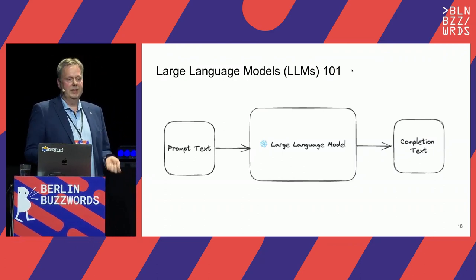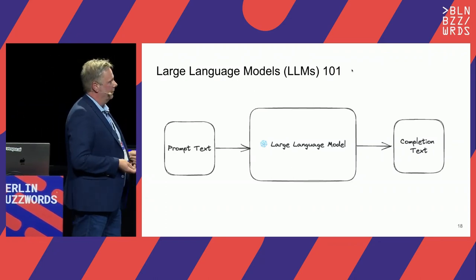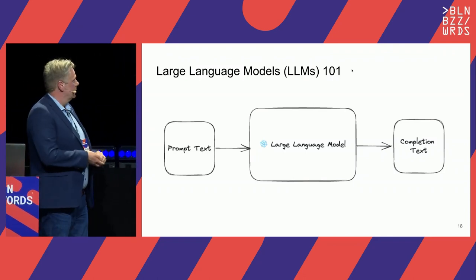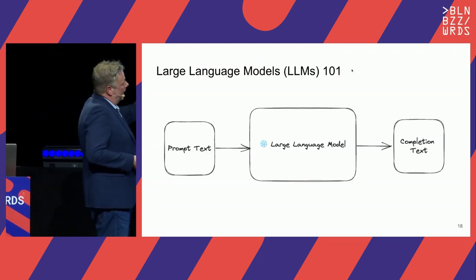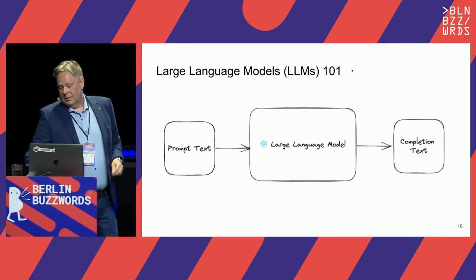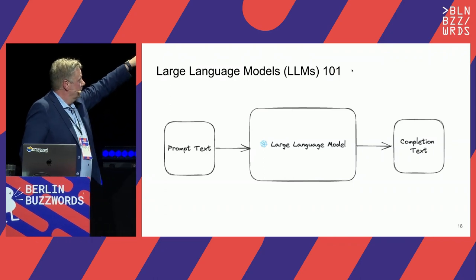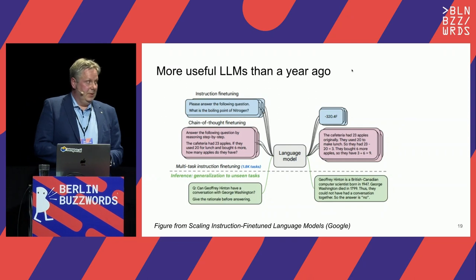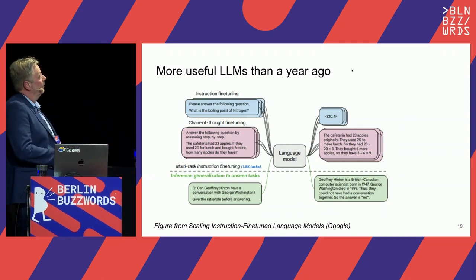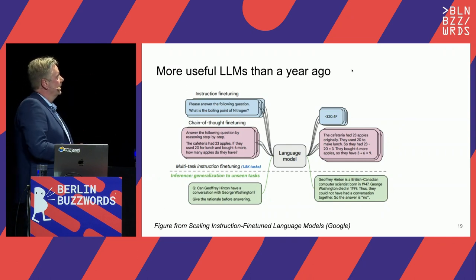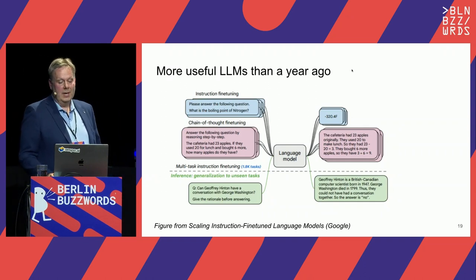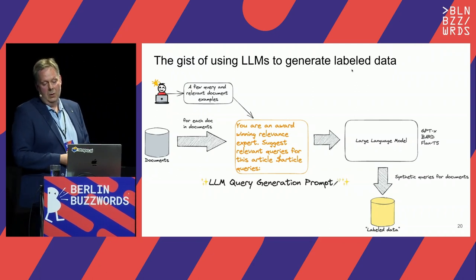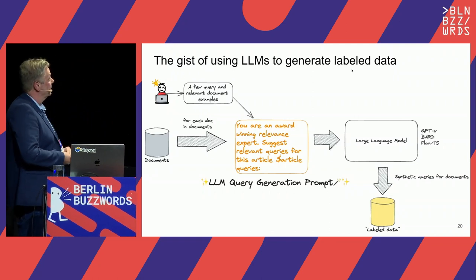The next part of the talk covers a high-level overview of what these models are actually doing. Large language models 101: you have some prompt instructions, you have a text, you input that to a frozen large language model. For example, with ChatGPT, you can input 'write me a Christmas song in the tone of Snoop Dogg' and it will try to complete and give you some text as output. That's the basic interface. Most of the power came from instruction fine-tuning — tuning them on different tasks.